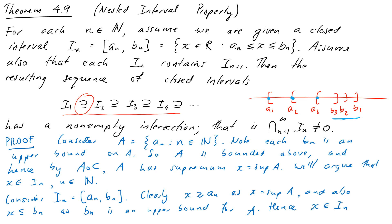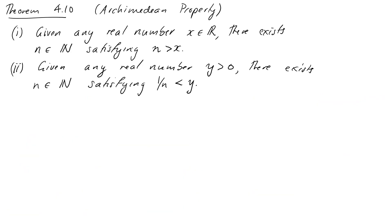Since our interval was chosen arbitrarily — it doesn't matter if n is 10 or a thousand, the argument works exactly the same way — x is in all of the intervals, and hence our theorem is proven.